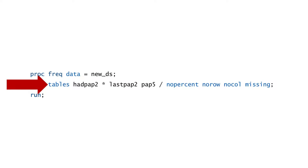Specifically, in my table statement, I'm asking SAS to give me a contingency table with possible responses for hadPAP2 in the rows by possible responses for lastPAP2 in the columns. I'm also asking for a separate one-way frequency table for my new variable PAP5. I want to compare the values in PAP5 with the values in hadPAP2 and lastPAP2.